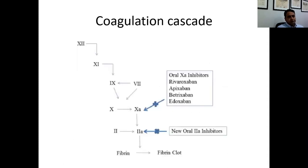Looking at the coagulation cascade, the newer oral anticoagulants — they're not new anymore, but those that came to market in the last 10 years — include the Factor IIa inhibitors or direct thrombin inhibitors, which I'll talk about, and the oral Factor Xa inhibitors, especially rivaroxaban and apixaban, which I'll cover in detail.